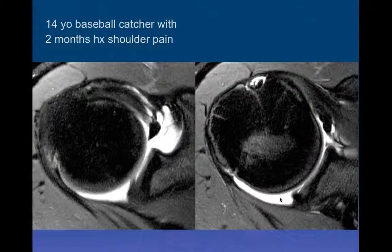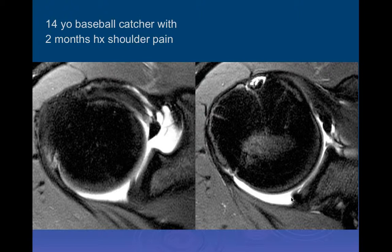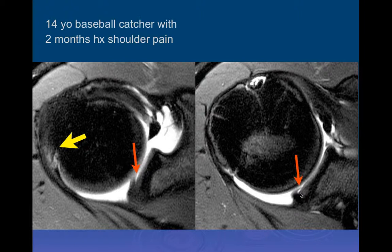There's sometimes a loose body, but that's generally rare. Here's a 14-year-old baseball catcher with a two-month history of pain. We can see early impaction injury of the humeral head, and we can also see a posterior superior labral tear in this individual. This is not a superior recess - it's in the posterior superior area - and that's an early labral tear due to the impaction of the posterior superior glenoid against the posterior superior humerus in the late cocking phase of throwing.